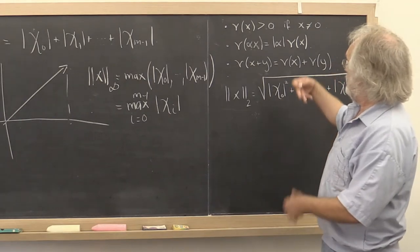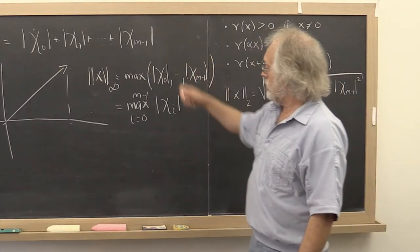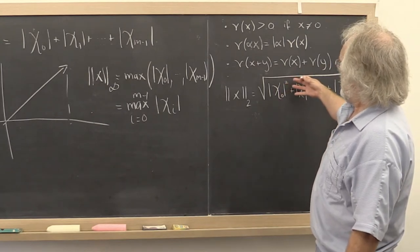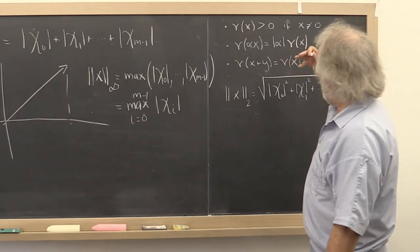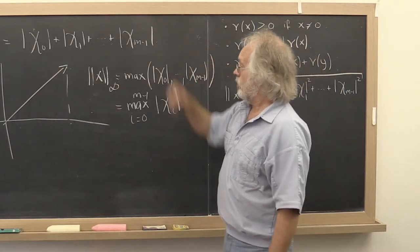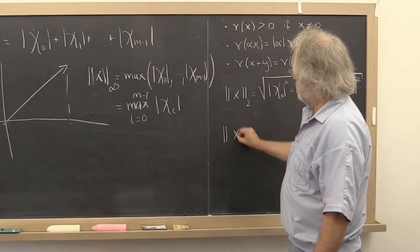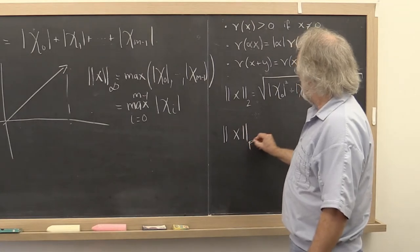All right. So now we have the 2-norm, we have the 1-norm, we have the infinity norm. We can kind of see something in common between this norm and that norm. They are really special cases of something called the p-norm. And what is the p-norm?